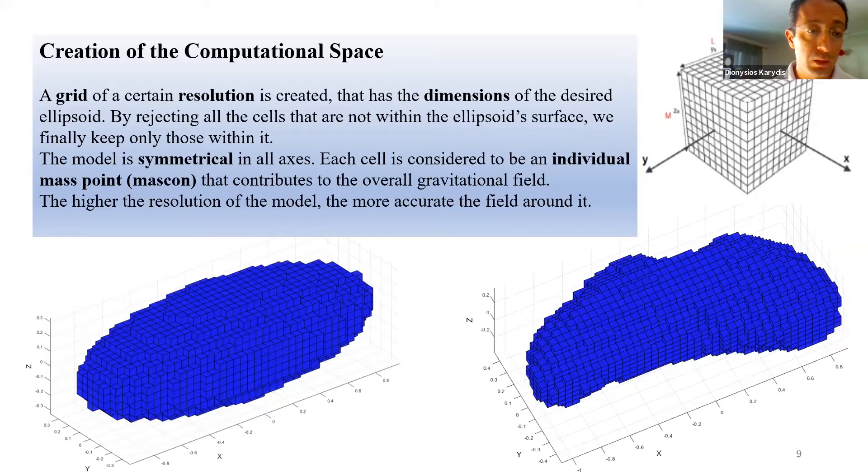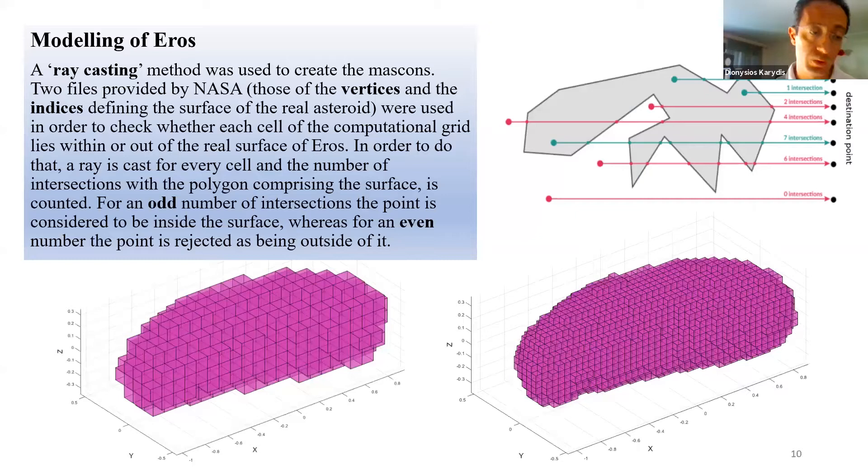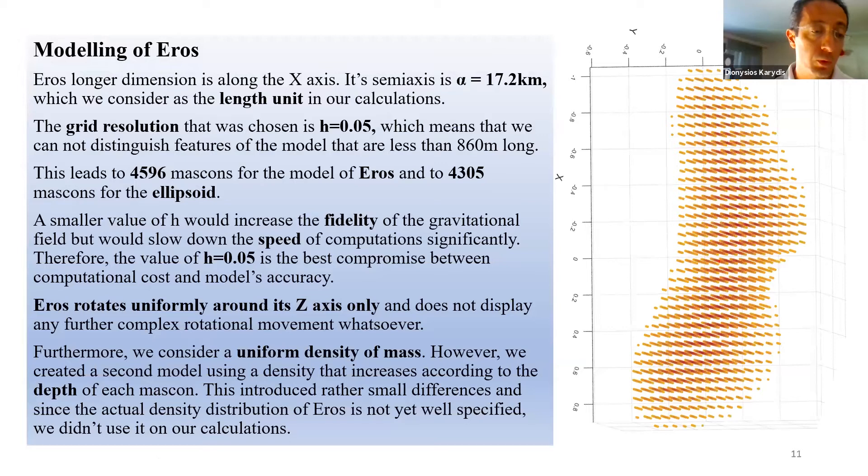In order to create the computational space needed, a grid of a certain resolution is created that has the dimensions of the desired ellipsoid. The same principles apply for modeling Eros. Since no symmetries exist here, a ray casting method was used to create the mass cons. Two files provided by NASA were used in order to check whether each cell of the computational grid lies within or out of the real surface of Eros. The grid resolution that was chosen is the best compromise between computational cost and models accuracy. This leads almost to 4,600 mass cons for the model of Eros and to 4,300 mass cons for the ellipsoid.